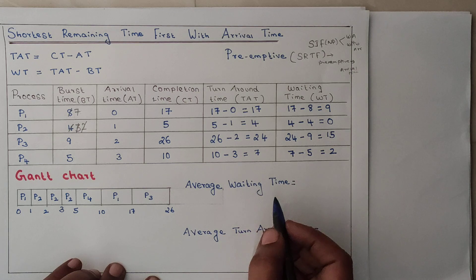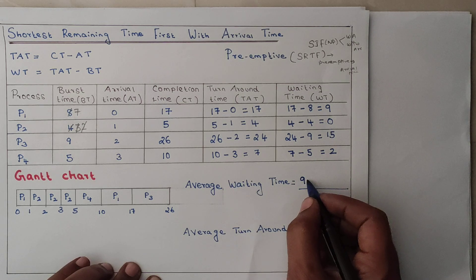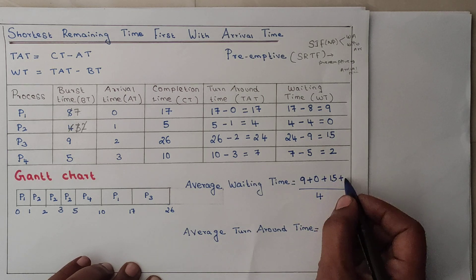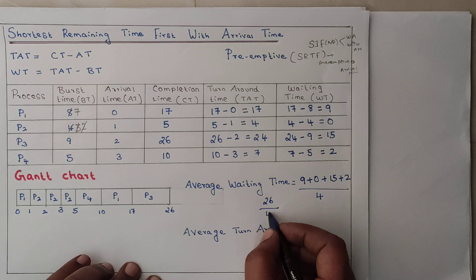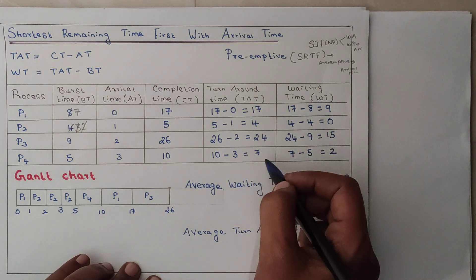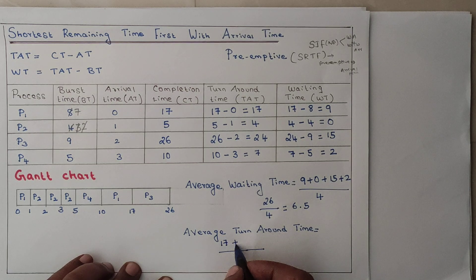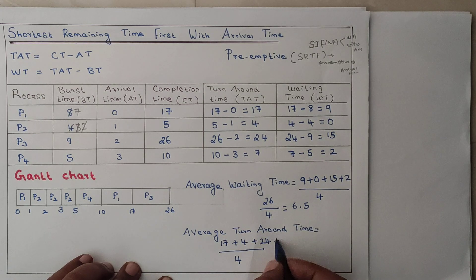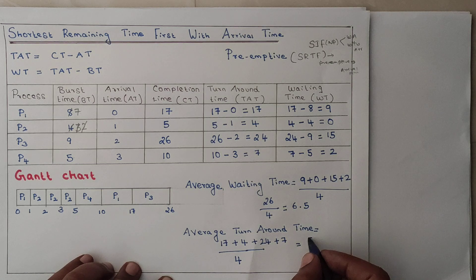Average waiting time equals sum of waiting times divided by total number of processes (4). Waiting times: P1 is 9, P2 is 0, P3 is 15, P4 is 2. Total is 26, divided by 4 gives approximately 6.5 milliseconds. Average turnaround time: P1 is 17, P2 is 4, P3 is 24, P4 is 7. Total is 52, divided by 4 gives 13 milliseconds.